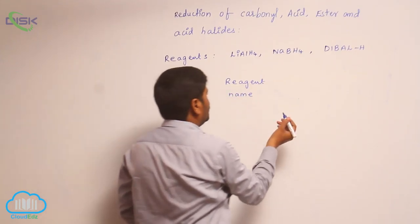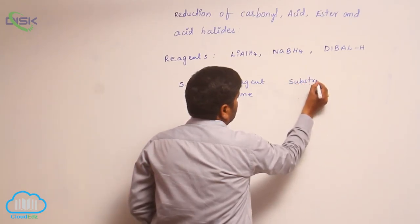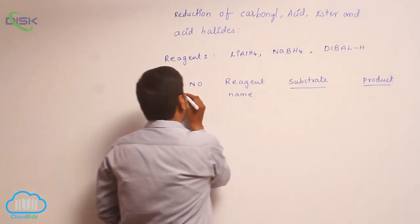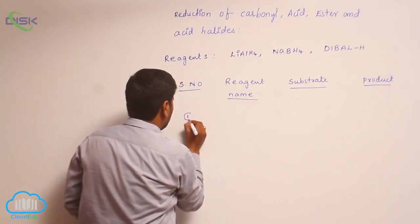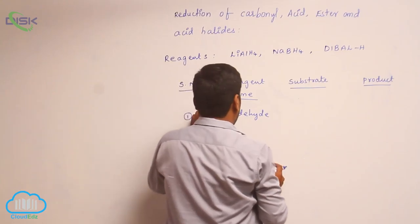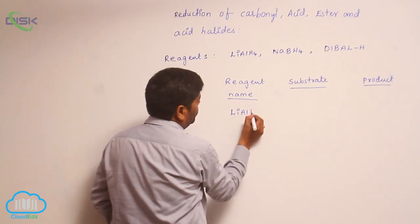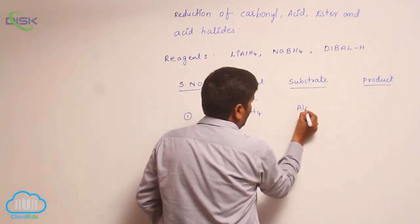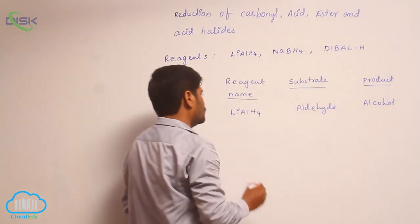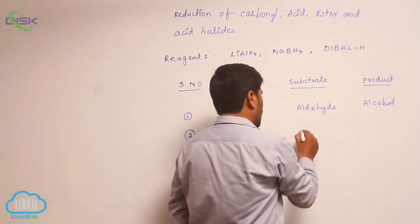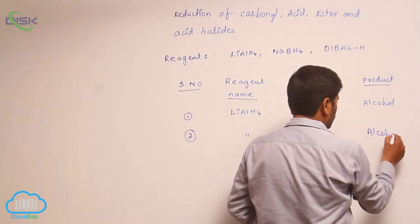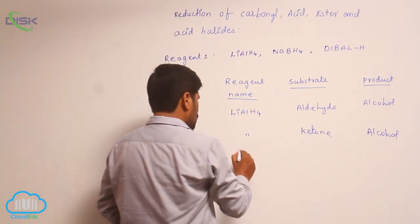The table has columns: serial number, reagent name, substrate, and product. Number one: lithium aluminum hydride with aldehyde as substrate converts into alcohol. Number two: lithium aluminum hydride with ketone converts into alcohol. Number three: sodium borohydride.